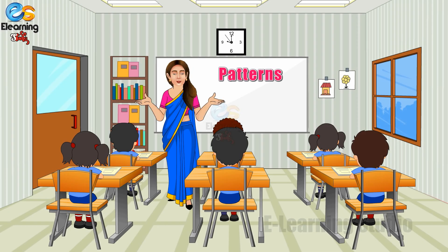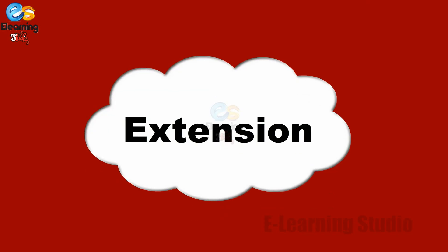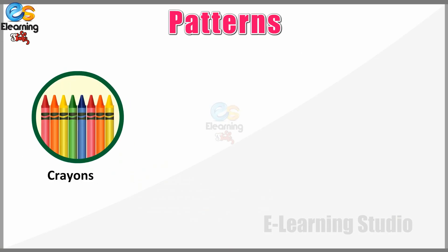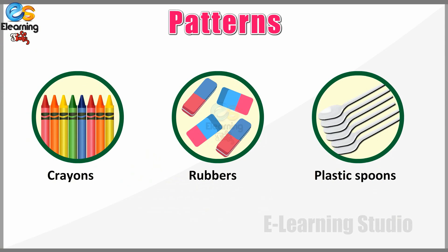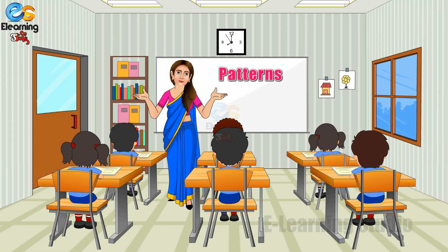I hope you have now understood how to complete patterns related to numbers. Children, why don't you pair with your friend and make some patterns with real objects? You can make use of crayons, rubbers, plastic spoons, etc. You may also make use of paper and pencils to write numbers and complete the different number sequences. You will surely have fun!